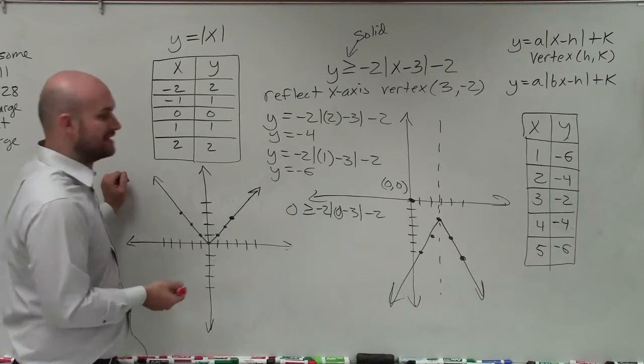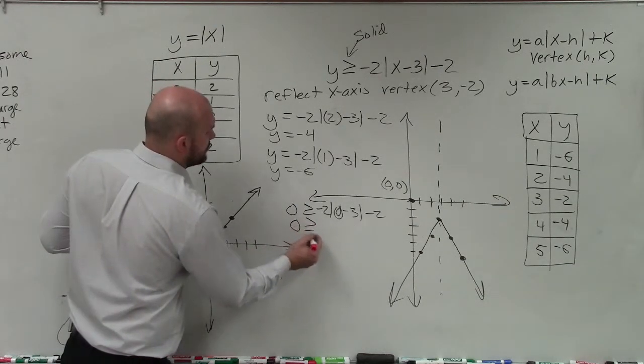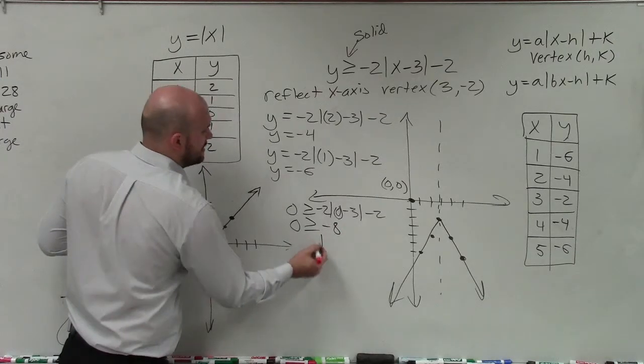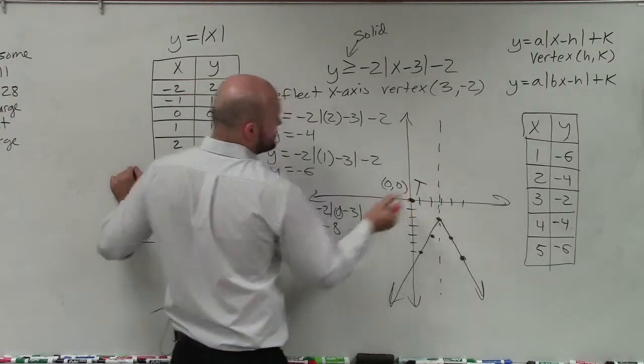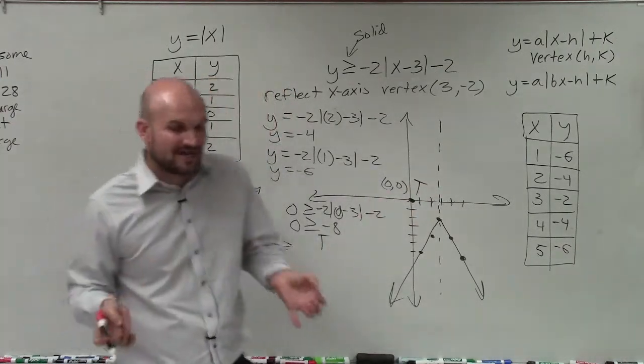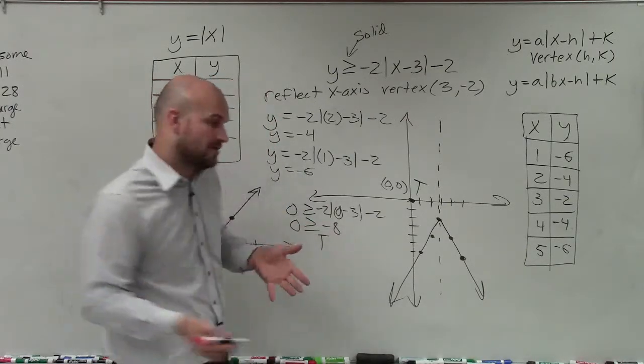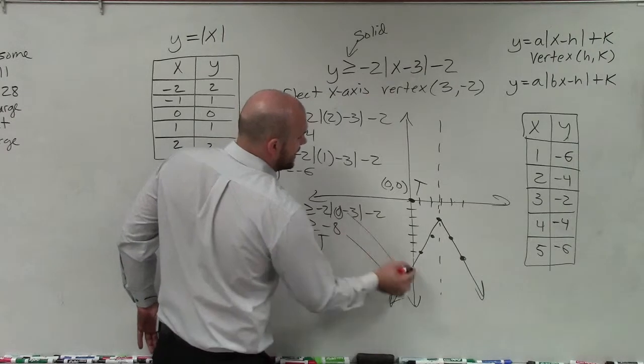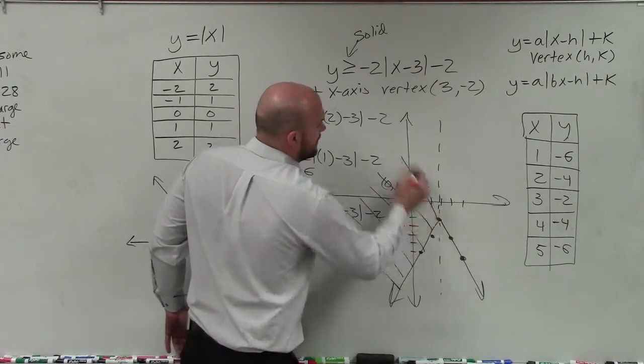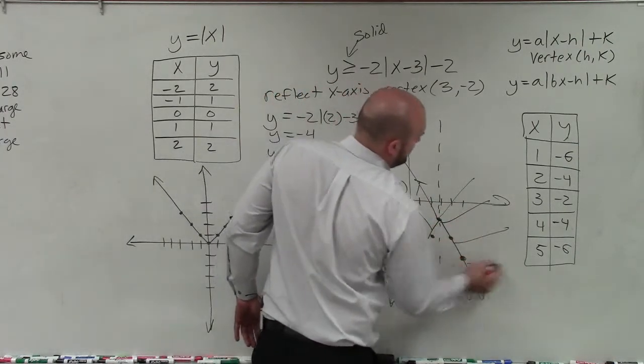Negative 6 minus 2 is negative 8. Is 0 greater than or equal to negative 8? Yes, that's true. That means this point is true. And if the point outside of the absolute value equation is true, that means all the points outside are going to be true. So we're going to shade all the way on the outside.